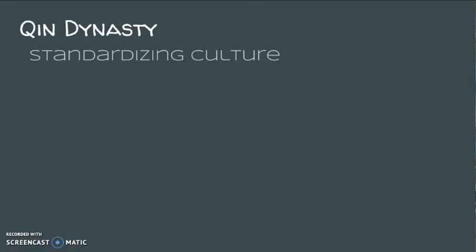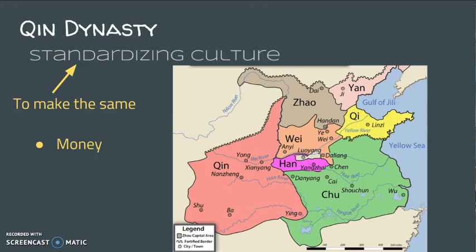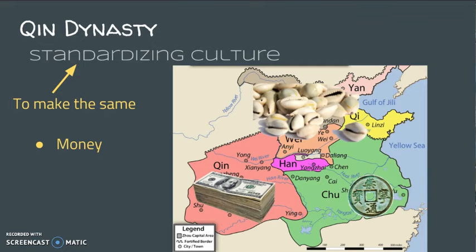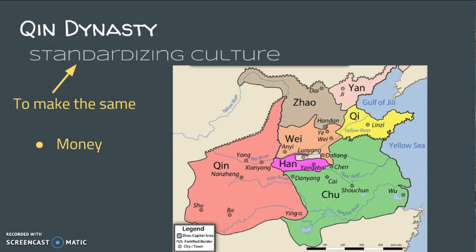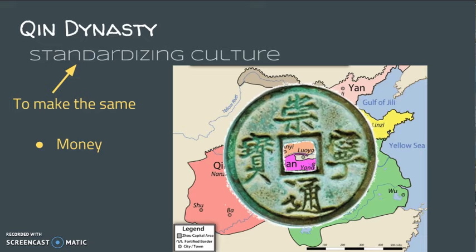The Emperor did a lot of things and had many achievements for the people of China. One achievement was standardization, which simply means to make the same. Looking at the map, all these states prior to the Emperor ruling China might have had different forms of money. What the Emperor did was he took away all that money and made one money — he standardized the money, one money to use all throughout China.